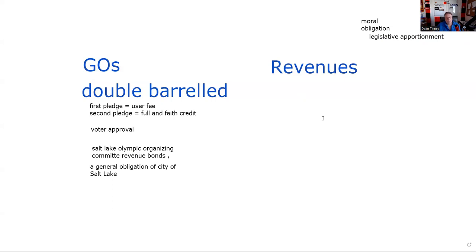I think that's where a lot of test takers struggle. There are only two types of bonds — GOs and revenues. Granted, there are a zillion subcategories, but at the end of the day, it's either GO or revenue.